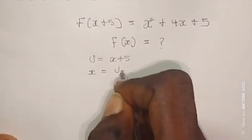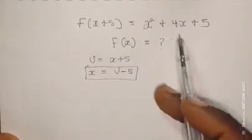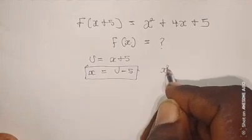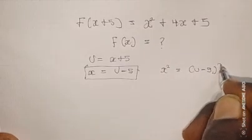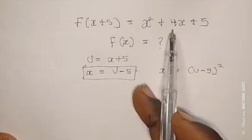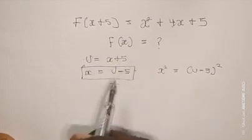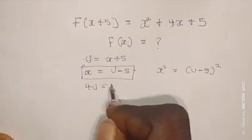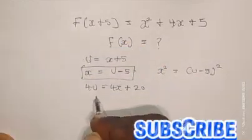When u equals √(x+5), x is equal to (u-5) raised to the power of 2. Note that when you square both sides, x² equals (u-5)². For 4x, if you multiply both sides by 4, we get 4u, and 4 multiplied by all of this gives us 4x + 20.